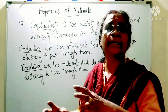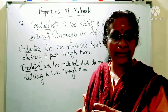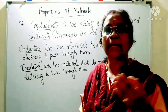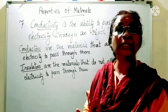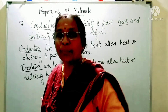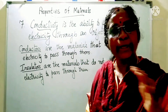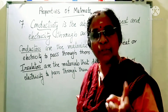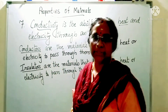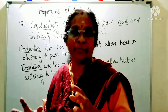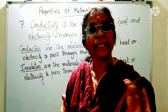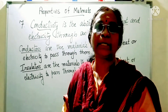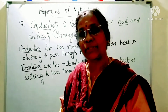We also say good conductors and bad conductors. Conductors are also called good conductors, and insulators are called bad conductors — meaning they do not allow heat and electricity to pass through them. According to the ability to pass heat and electricity, materials can be divided into 2 groups: conductors and insulators.